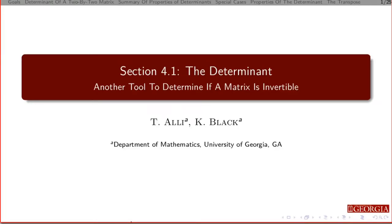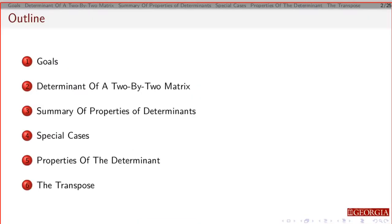We're going to look at section 4.1. We're going to define something called the determinant and look at some of its properties. Our basic goal is to look at the determinant as something that tells us whether or not the inverse of a matrix exists. We'll define the determinant for a 2x2 matrix, look at some properties and special cases, and then look at something new called the transpose.